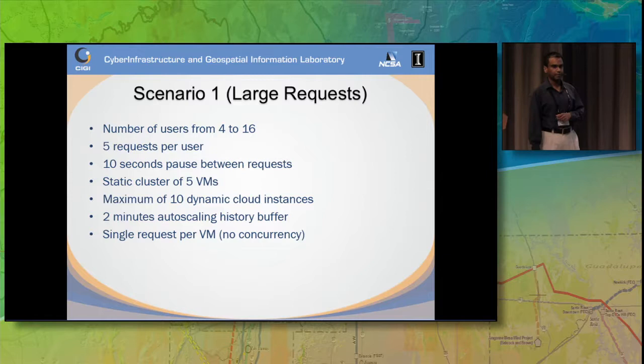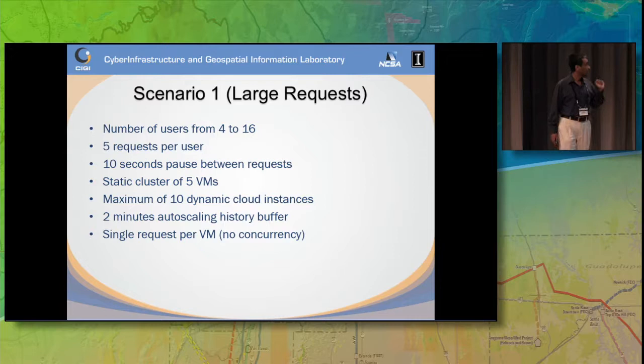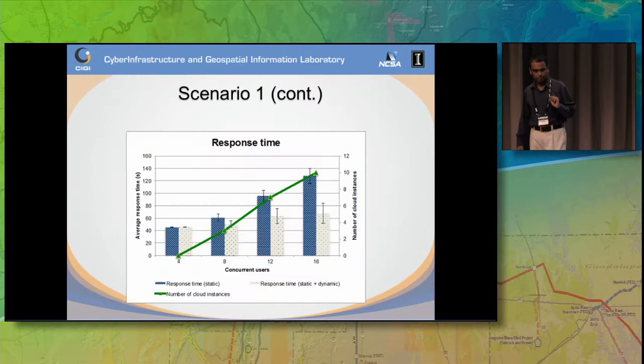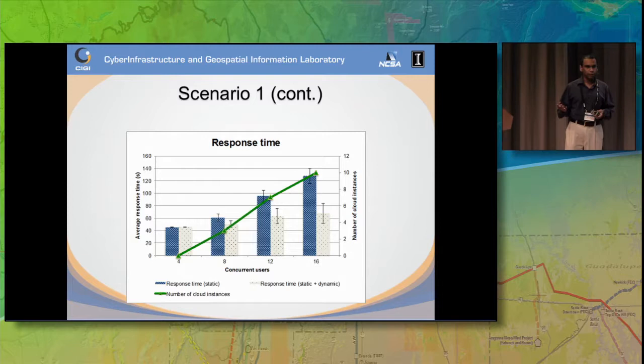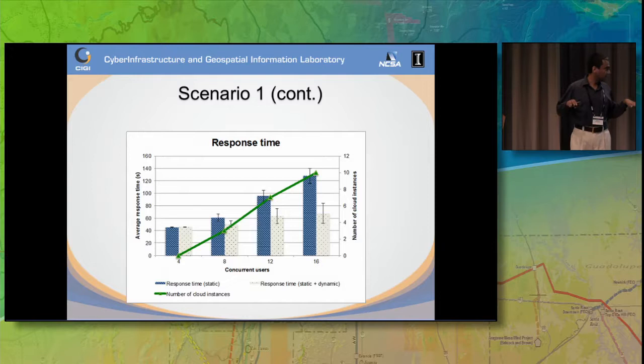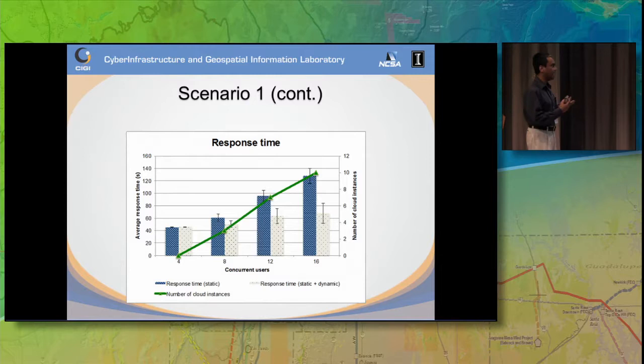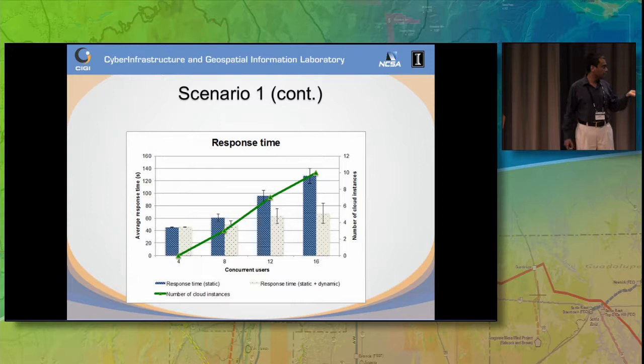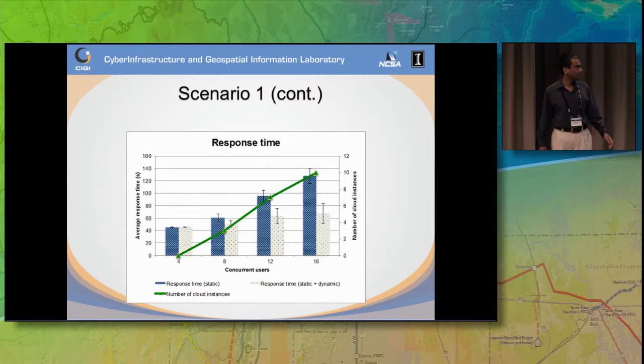For the first scenario with four to sixteen users and one request per VM: when we had just four users, response time for the static and new approach was almost the same, since five resources were used efficiently. Starting with eight concurrent users, you begin to see differences in response time between static and dynamic. In the extreme case with 16 users, the response time with the dynamic approach is almost half that of the static cluster.